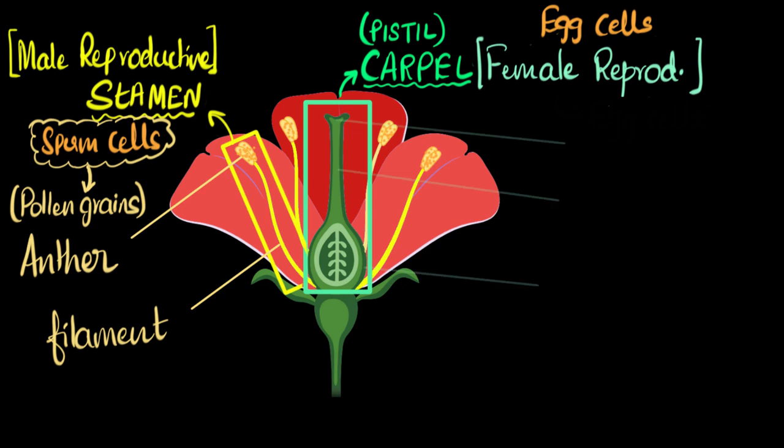All right, let's do the female parts now. The female reproductive part, the carpel or the pistil, they can be further divided into three major parts. So the topmost part is called the stigma. The part below, it's a long structure over here, it's called the style. And this structure over here is what we call the ovary.